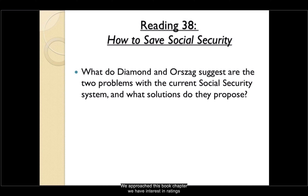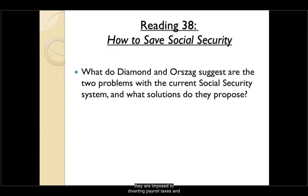This book chapter includes five readings debating the future of the Social Security system. In Reading 38, 'Saving Social Security: A Balanced Approach,' the authors acknowledge that the Social Security Trust Fund faces a long-term deficit, but they are opposed to diverting payroll tax revenue into private accounts. The reading offers suggestions and proposed solutions about the current Social Security system.